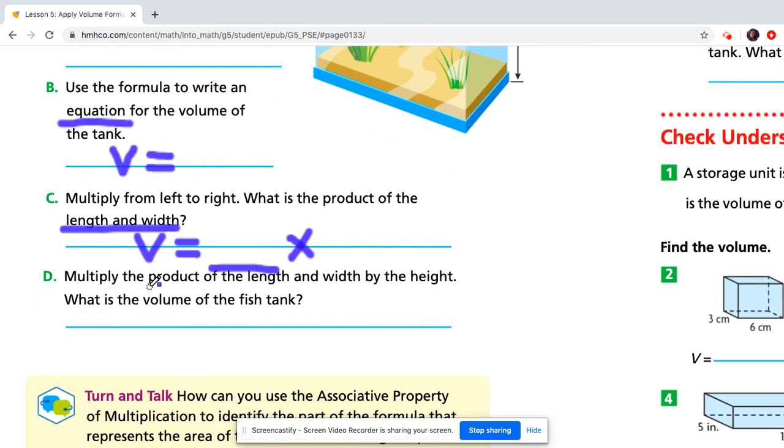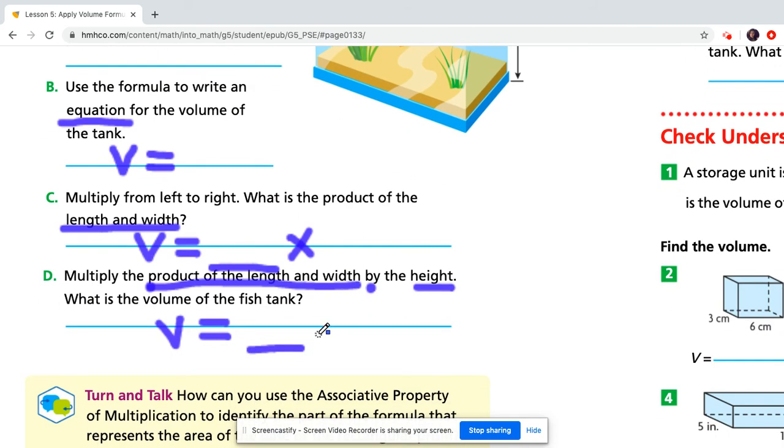Part D says, multiply the product of the length and width, which is this number that you got here, by the height. So, that tells you that you should have a height here. Now, what is the volume of the fish tank? So, it should say, V equals whatever answer you get, and then you're going to look at your units, inches, and cubed.